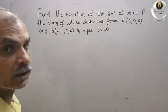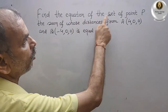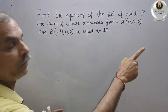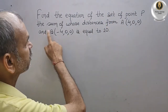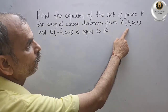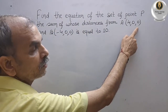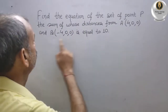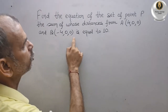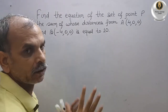Your question is: find the equation of the set of points P, the sum of whose distances from A(4, 0, 0) and B(-4, 0, 0) is equal to 10.